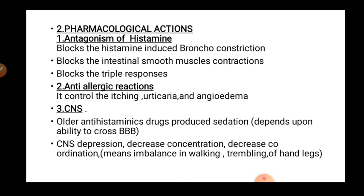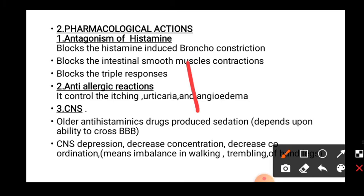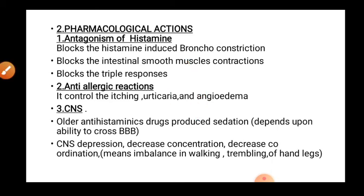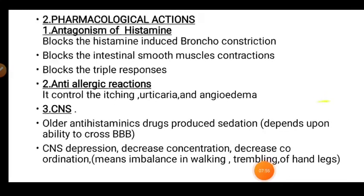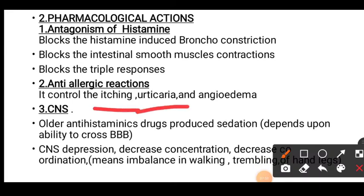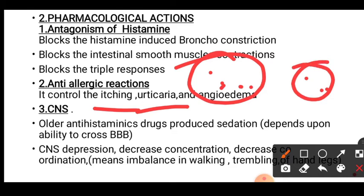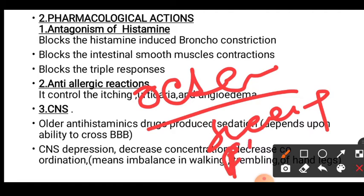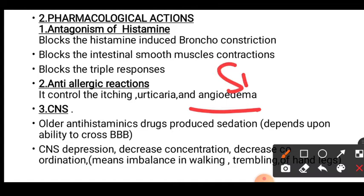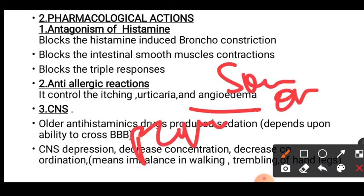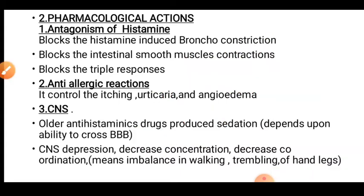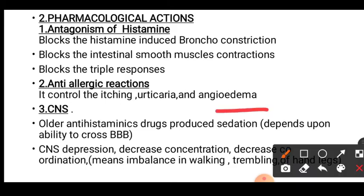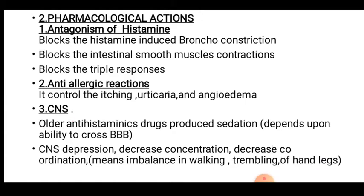These drugs block bronchoconstriction and smooth muscle contraction, and block the triple response. In the triple response, first a red line is created, then the surrounding tissue swells, and then whitish fluid is released — this inflammatory condition is called the triple response. It also reduces allergic reactions such as itching, urticaria (red patches all over the body), and angioedema, which means skin swelling with fluid deposition. Similarly, pulmonary edema means lung tissue swelling with fluid deposition.